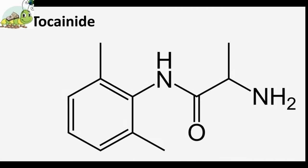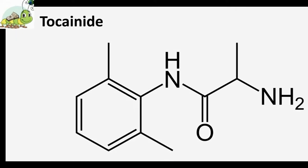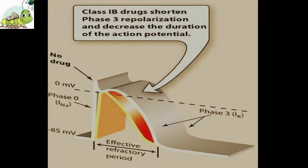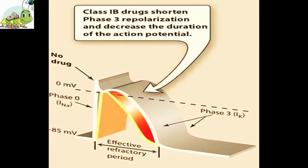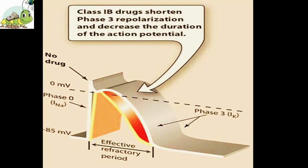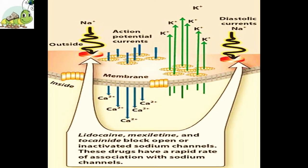Seventh drug: Tocainide. Tocainide is an orally effective antiarrhythmic agent with close structural similarities to lidocaine. Electrophysiological action in healthy volunteers: Tocainide produces a slight depression in His-Purkinje conduction as well as a slightly delayed enhancement of AV node conduction during atrial pacing. No significant alterations in heart rate, right ventricular ERP, or the excitation thresholds of atrial or ventricular muscle were observed in these subjects.